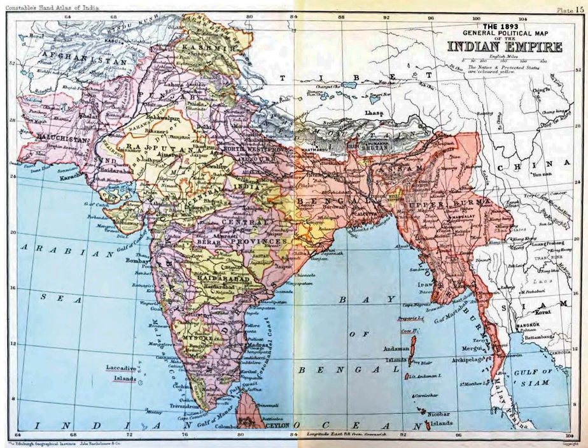The East India Company, which was incorporated on 31 December 1600, established trade relations with Indian rulers in Masalipatam on the east coast in 1611 and Surat on the west coast in 1612. The company rented a small trading outpost in Madras in 1639. Bombay, which was ceded to the British crown by Portugal as part of the wedding dowry of Catherine of Braganza in 1661, was in turn granted to the East India Company to be held in trust for the crown. In eastern India, after obtaining permission from the Mughal Emperor Shah Jahan to trade with Bengal, the company established its first factory at Hooghly in 1640.